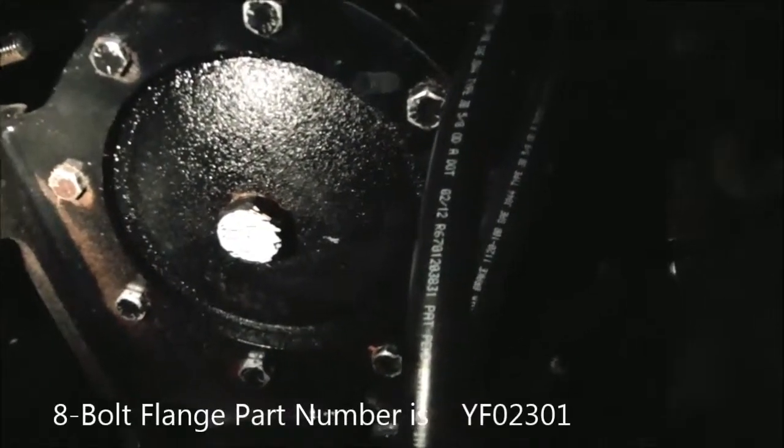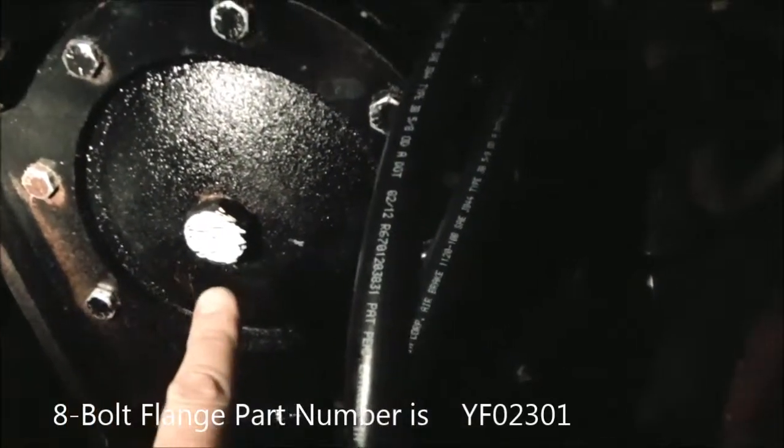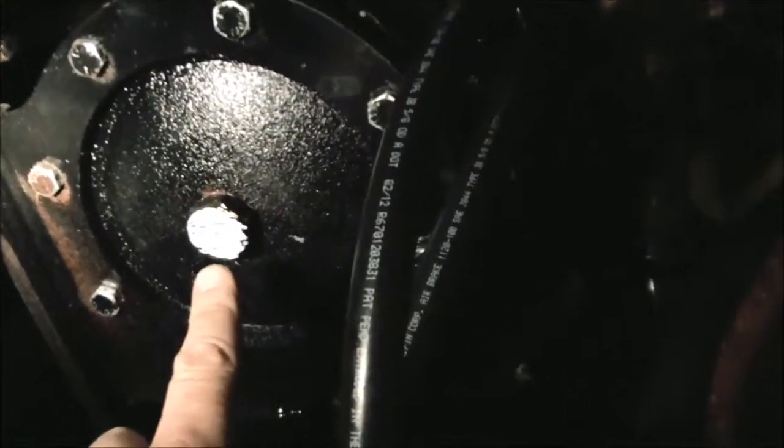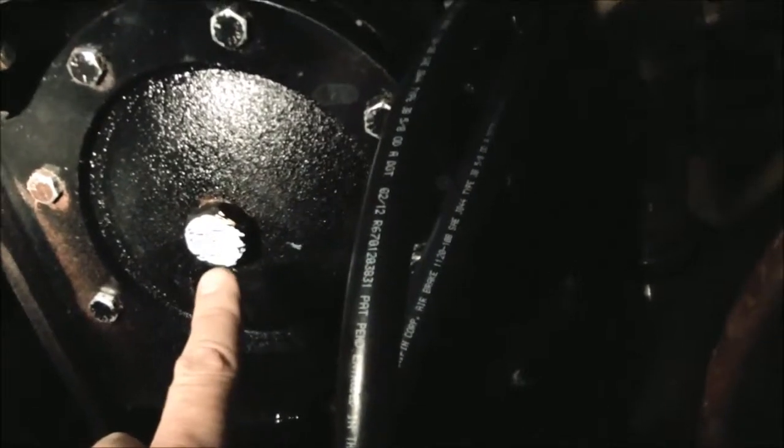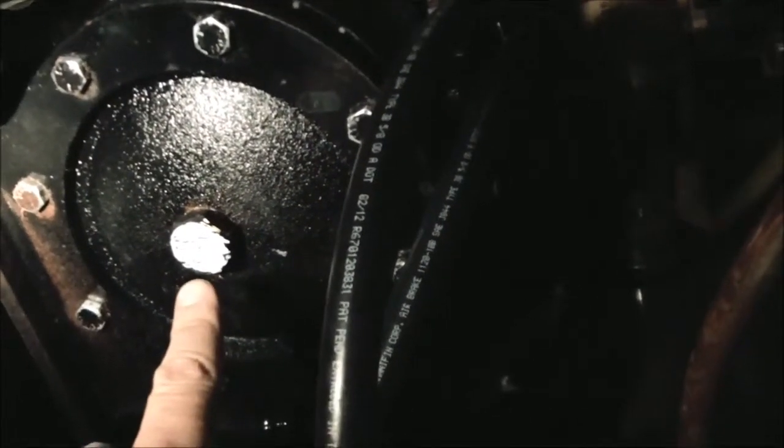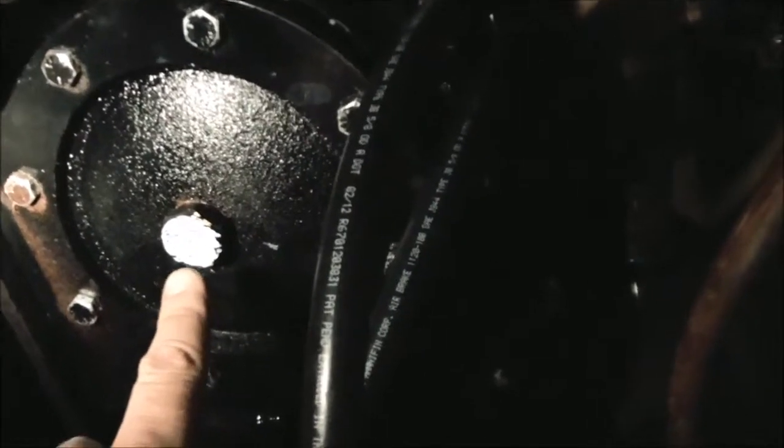This eight bolt flange here has the anode. You can see the anode here coming through the end of this eight bolt Darley flange. Using that one and one sixteenth inch socket with a half inch drive ratchet we can easily remove this anode for replacement.